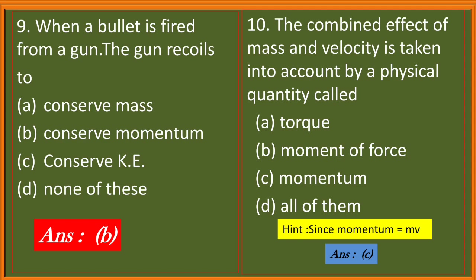Question 9. When a bullet is fired from a gun, the gun recoils to: conserve mass, conserve momentum, conserve kinetic energy, none of these. Here, the correct answer is B, conserve momentum.